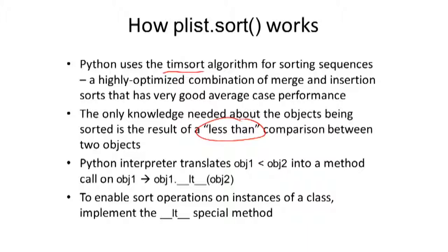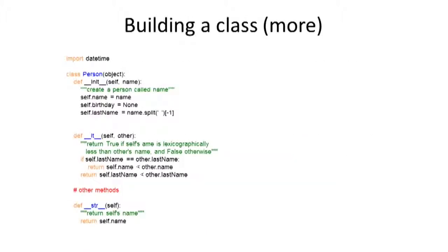And in particular, the Python interpreter translates a less than comparison of two objects into a method call. It takes the first object, gets its less than method and then calls that on object two. That's nice because then, in order to enable sort operations on instances of a class, I just need to implement my particular version of a less than special method. And I can do that. Here it is. Here's my less than. I'm going to set up something that's going to return true if self's name is lexicographically, in terms of alphabetical sorting, less than the other's name and false otherwise.